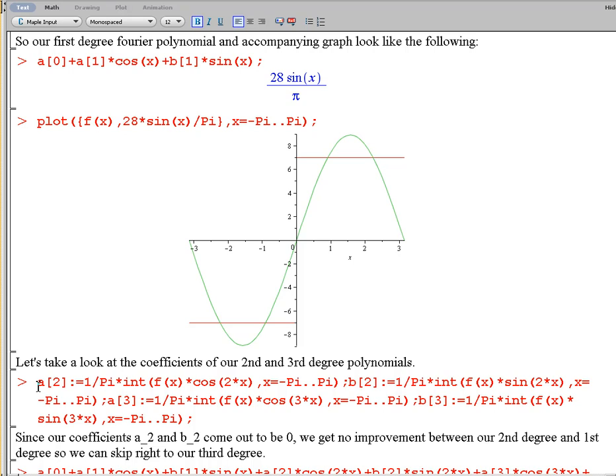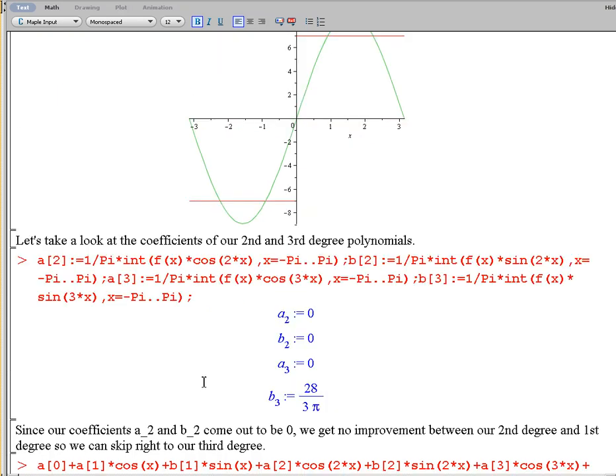Now because it's just a slight modification in our code to do more coefficients, in other words, I want to find a sub 2, the only difference is I have to put a 2 in my argument of cosine, and b sub 2 means I put a 2 in my argument of sine, so on and so forth. It's really quick to do the next few coefficients. So here's a sub 2, a sub 3, b sub 2, and b sub 3.